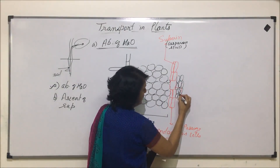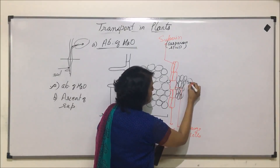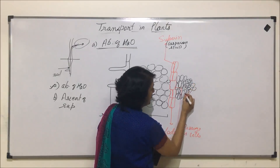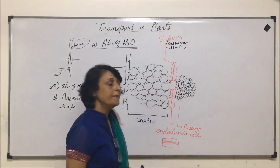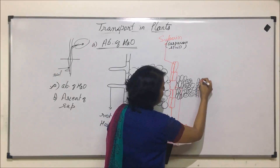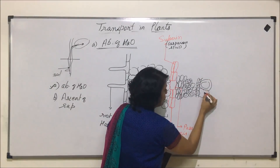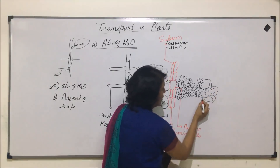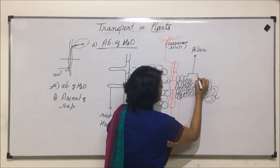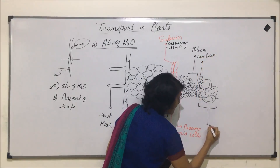Inner to endodermis there are compact cells which we call pericycle cells. Inner to pericycle is phloem — if we represent these with sieve plates we can differentiate them; there are parenchyma cells also. Then if we are talking about a dicot, there is cambium, and inner to cambium is our xylem. These are the xylem vessels which are going to actually take the water upwards. So this part is phloem, this strip is cambium, and this tissue is xylem.